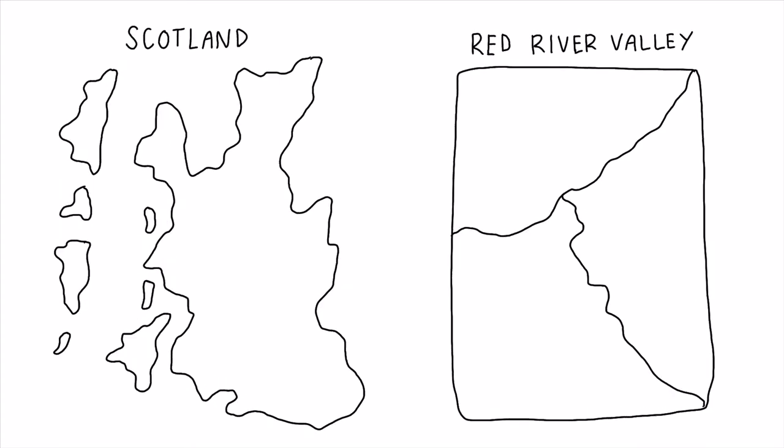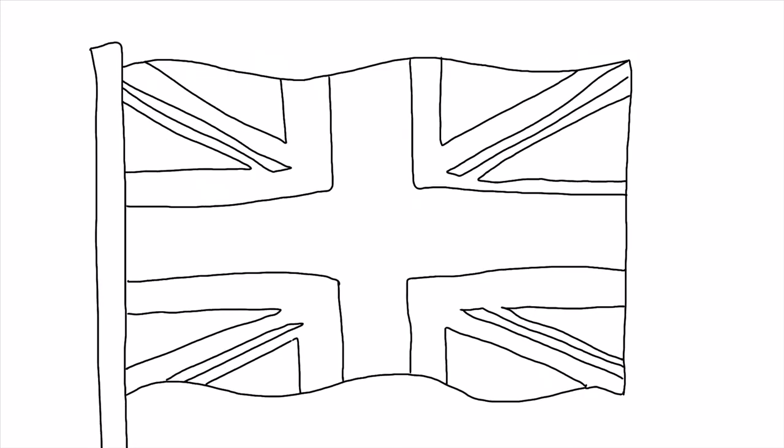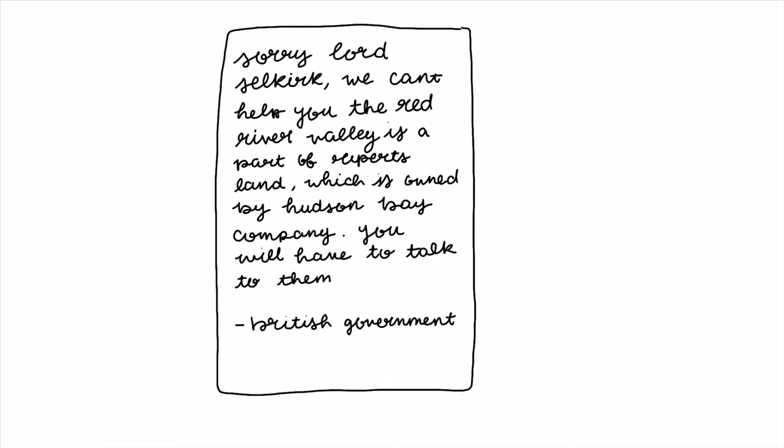Lord Selkirk wanted to use his power and political connections to gain control over Red River Valley to settle Scottish farmers on. He first talked to the British government. Sorry, Lord Selkirk, we can't help you.